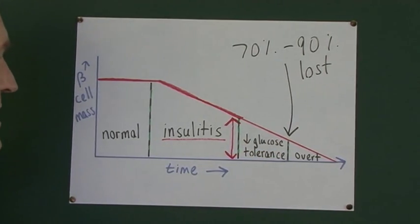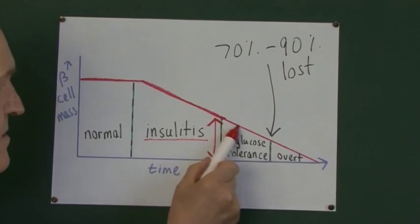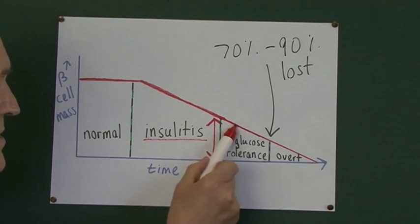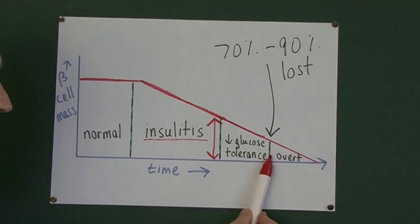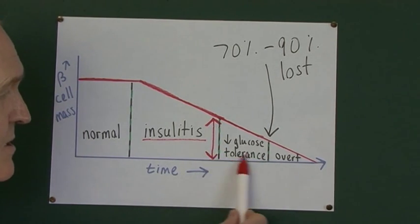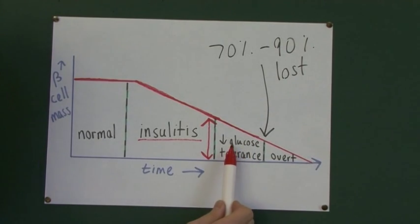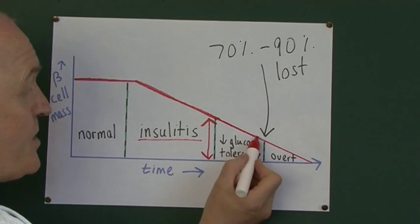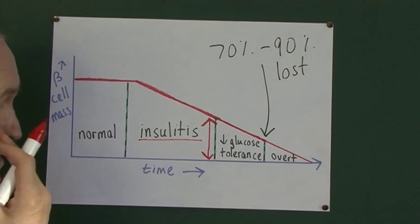But then, eventually, when more and more beta cells are lost, the patient will go into this phase of glucose intolerance. But in type 1 diabetes, you're probably not going to pick that up. Even though the patient is glucose intolerant, you're probably not going to pick it up unless you do a glucose tolerance test.